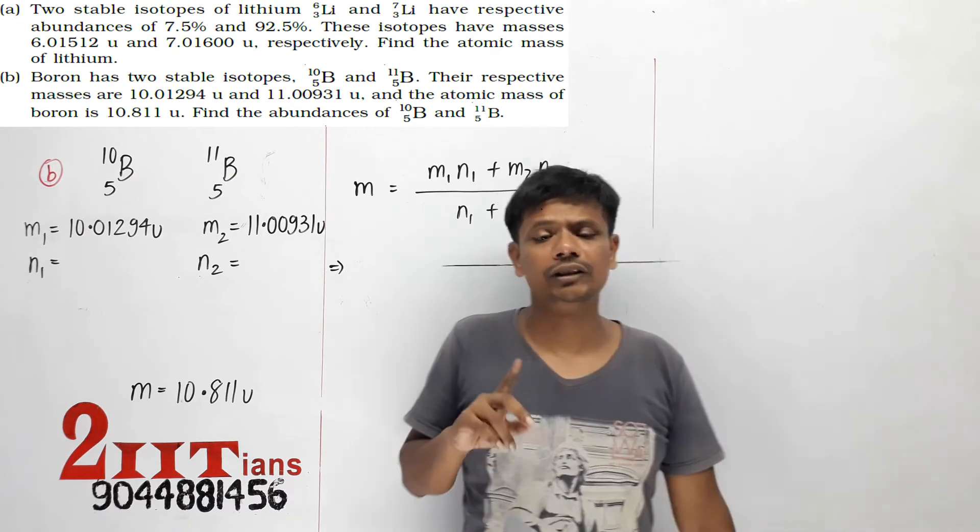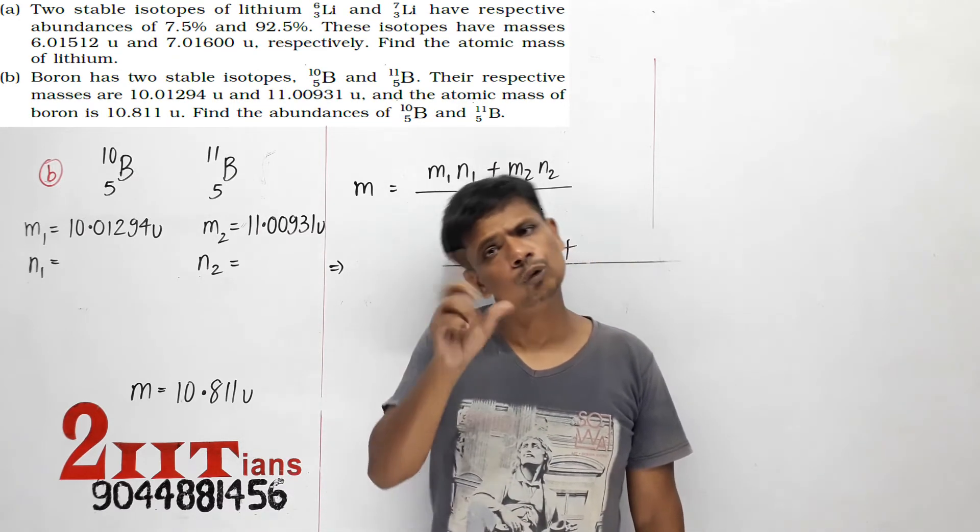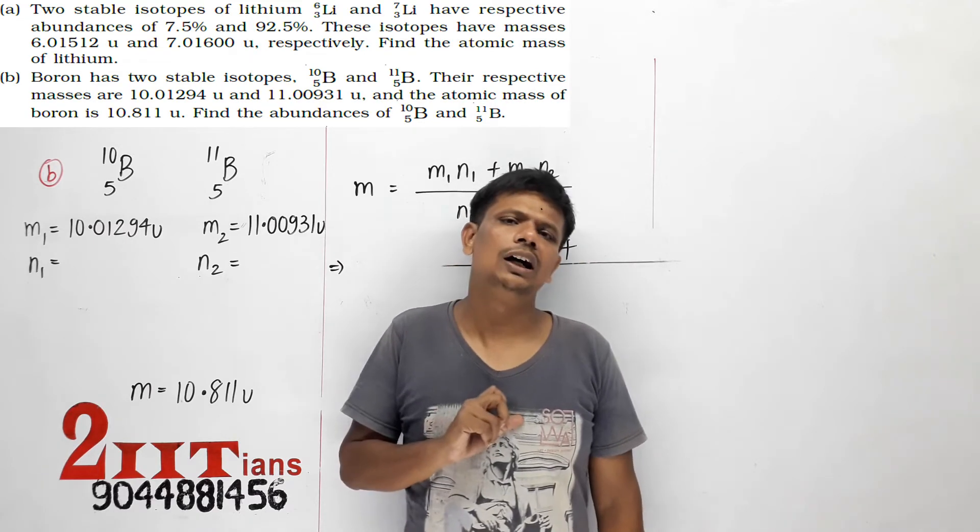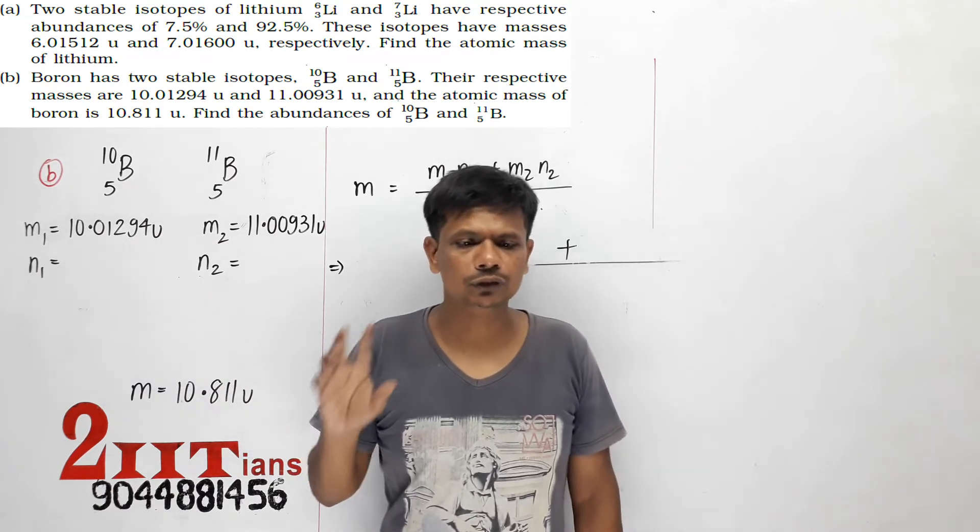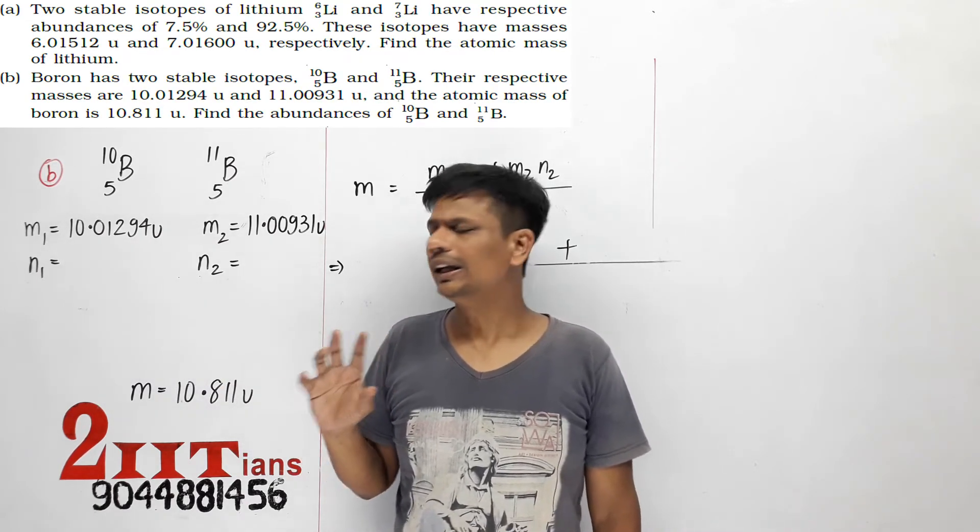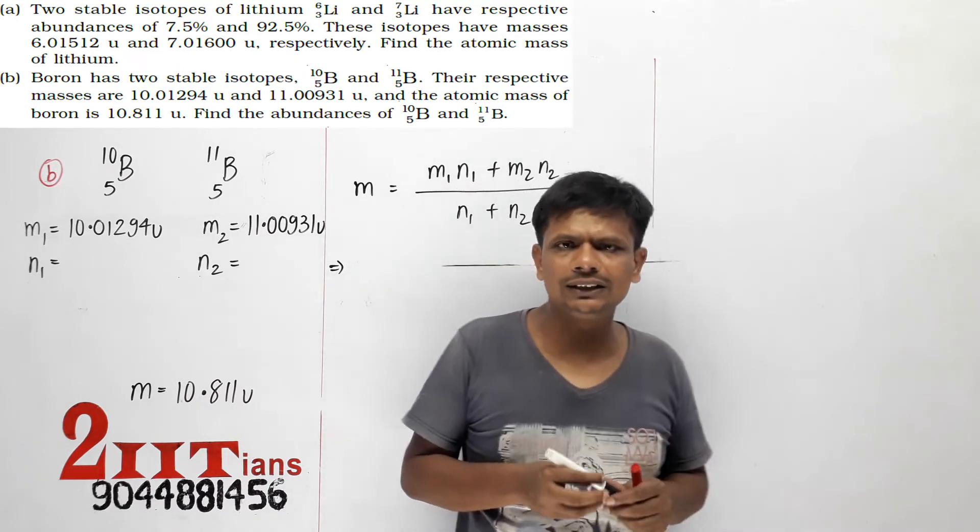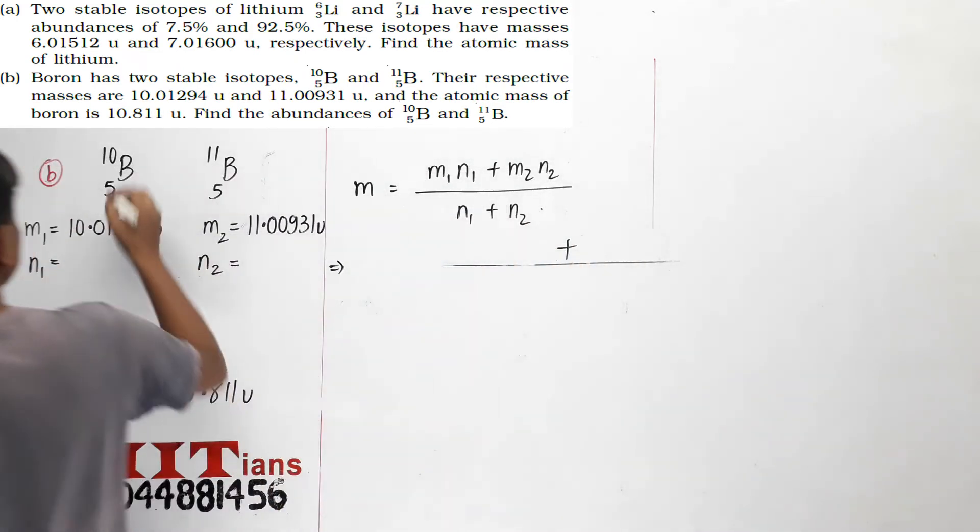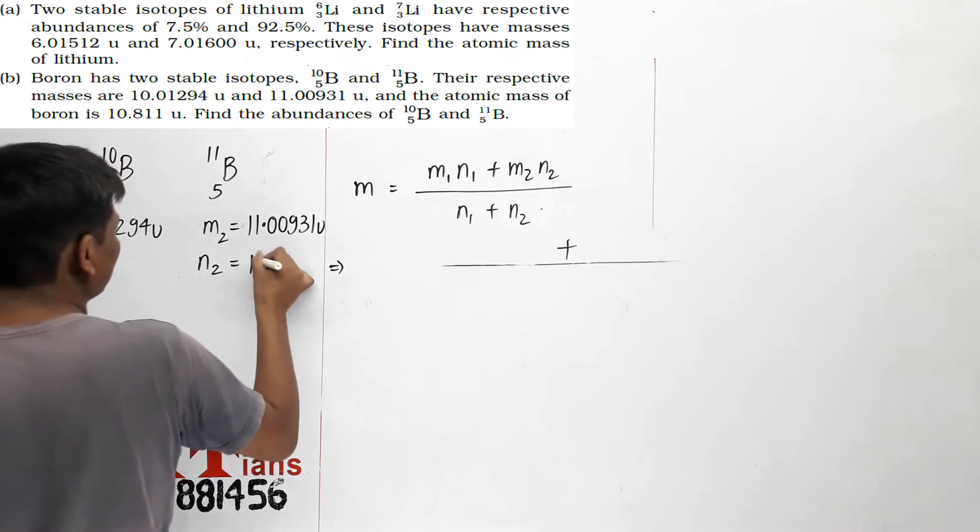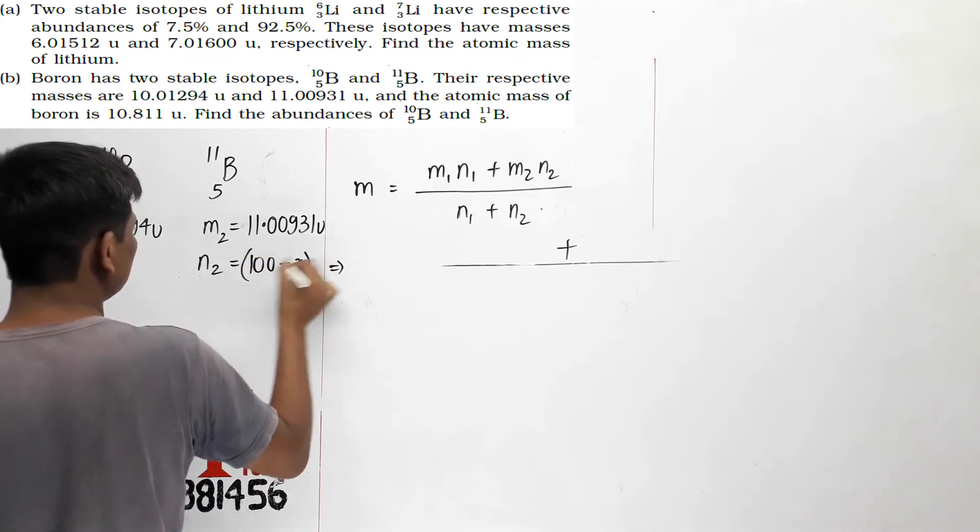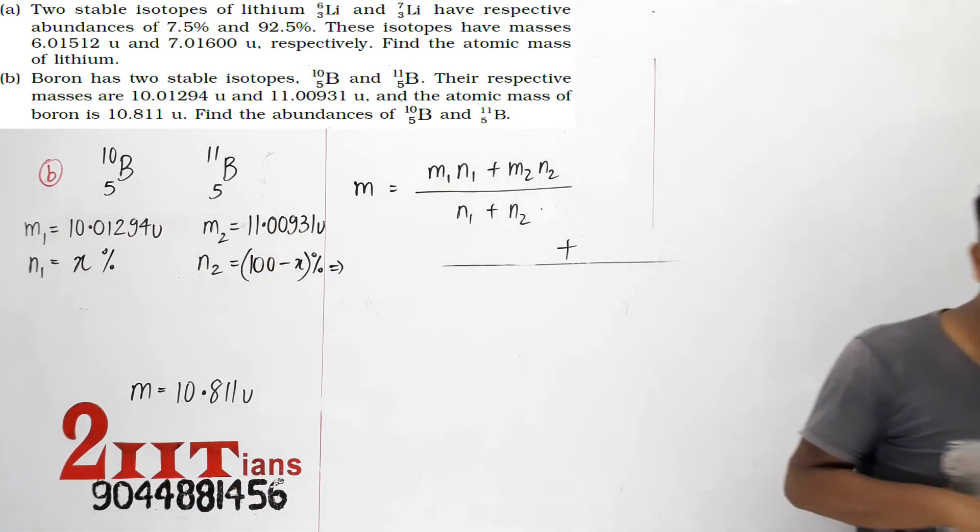Abundance means how much percent is this isotope and how much percent is that one, like in the previous problem where 7.5% and 92.5% were given. Now we have only two types of isotopes and they total 100%. So if this abundance is X percent, this abundance is 100 minus X percent.